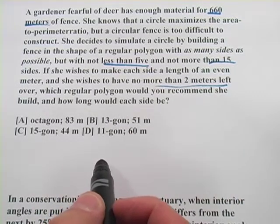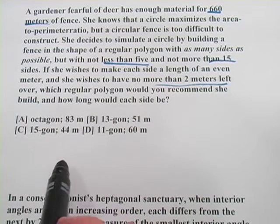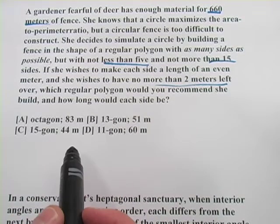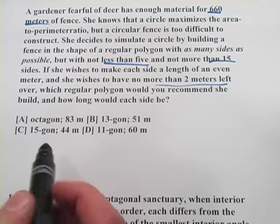Those are the key criteria. My suggestion, rather than looking for some kind of big formula here, is just test the information they're giving us. We have four answer choices, and we know that the more sides, the better.